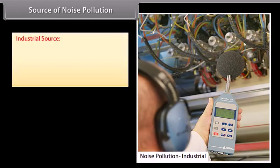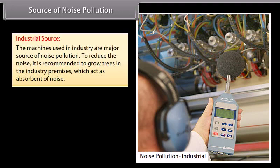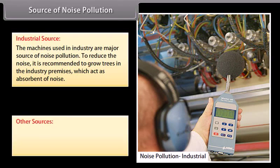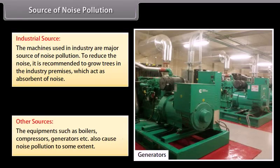Industrial source: the machines used in industry are a major source of noise pollution. To reduce noise, it is recommended to grow trees in the industry premises, which act as absorbents of noise. Other sources such as equipment like boilers, compressors, and generators also cause noise pollution to some extent.